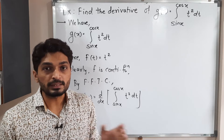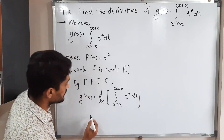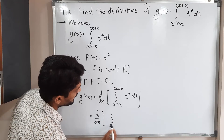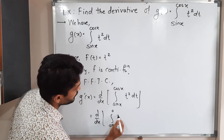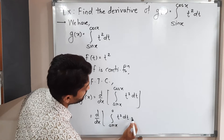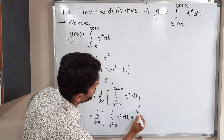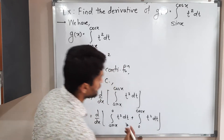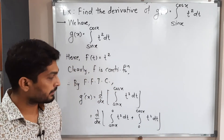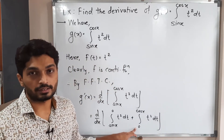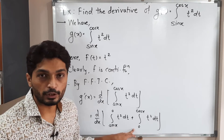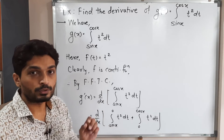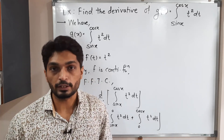What will I do? I am going to split this integration. This is equal to the derivative of: the integral from sine x to zero of t squared dt, plus the integral from zero to cos x of t squared dt. I have split the integration this way. We want a constant as the lower limit, and zero is a constant — but here zero appears as the upper limit of the first integral.